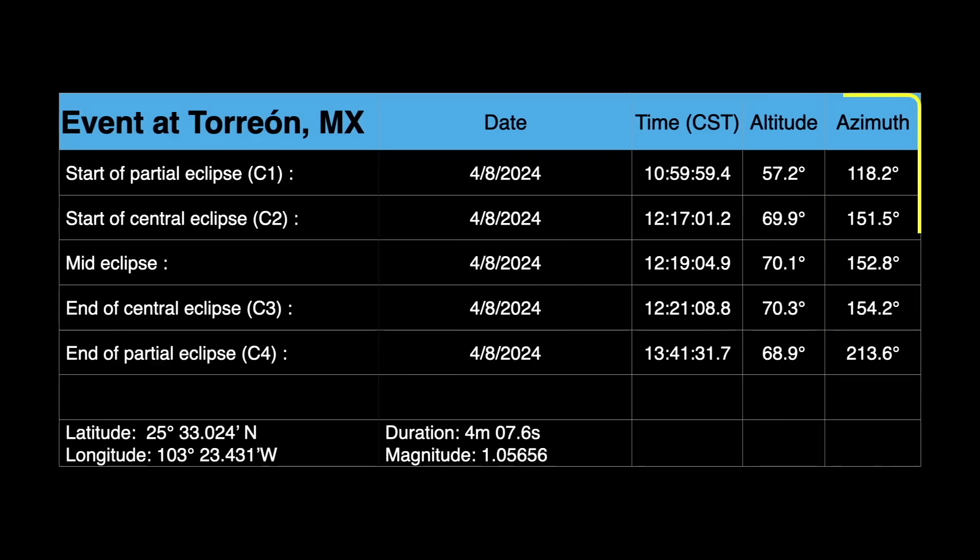And the azimuth of the sun. Azimuth is measured from due north, zero degrees, around the horizon in an eastward direction. So, altitude and azimuth give you how far up and how far around you look for the sun. Again, note these times are central standard times since Mexico does not participate in daylight savings time.